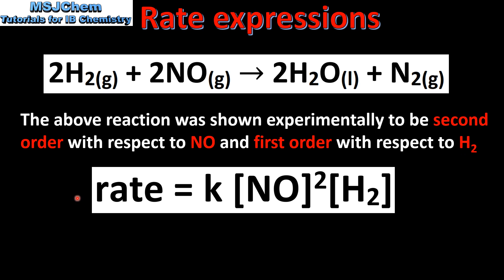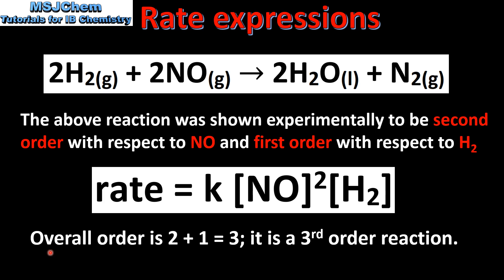Here we have the rate expression or the rate law for the above reaction: rate equals K multiplied by the concentration of nitrogen monoxide raised to the power 2, multiplied by the concentration of hydrogen. The overall order of reaction is 2 plus 1, therefore it is a third order reaction.